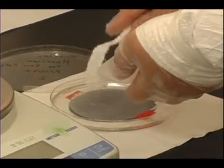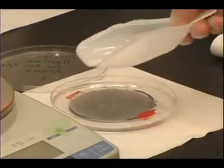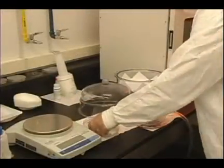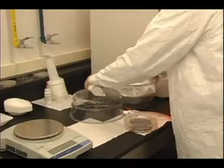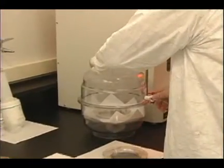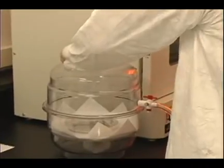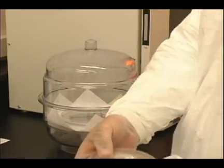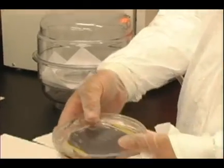We then pour the PDMS on top of the SU8 master that's in the petri dish. We place the master with the PDMS on top of it in a vacuum bell jar and evacuate the chamber to degas the air that we've mixed into it. Typically the degassing process takes 30 minutes to one hour.